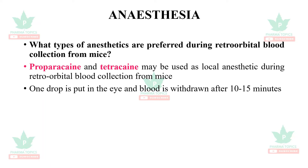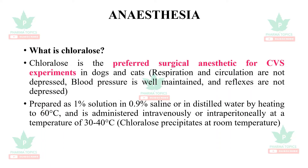What is chloralose? Chloralose is a preferred surgical anesthetic for cardiovascular experiments in dogs and cats because respiration, circulation, blood pressure, and reflexes are not depressed. It is prepared as a 1% solution in 0.9% saline or distilled water by heating to 60°C, and administered intravenously or intraperitoneally at 30–40°C. Chloralose precipitates at room temperature, which is why it must be heated before administration.